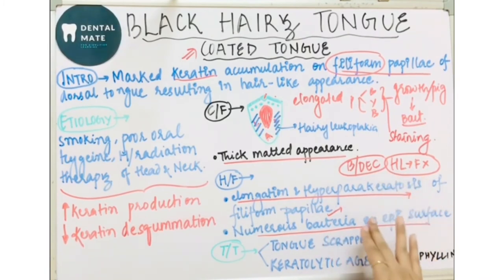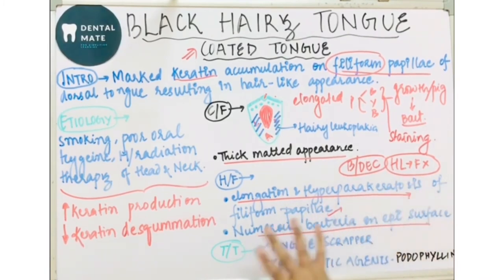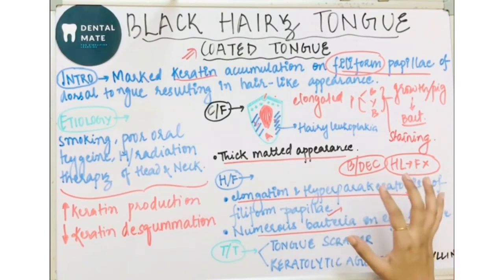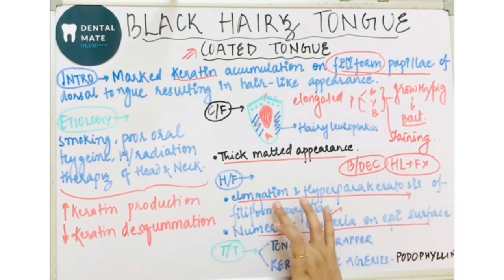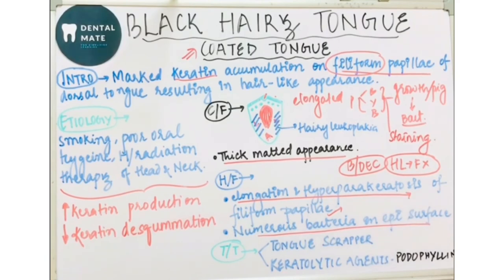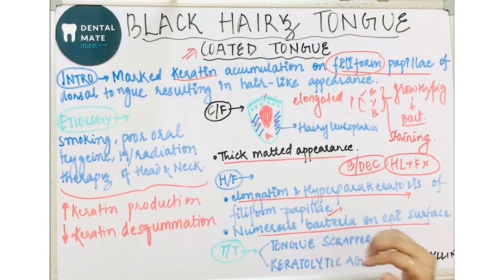Regarding histopathological features, there can be numerous bacteria seen on the epithelial surface, along with elongation and hyperparakeratosis of the filiform papillae. The treatment involves the use of a tongue scraper, and keratolytic agents like podophylline can be given sometimes.